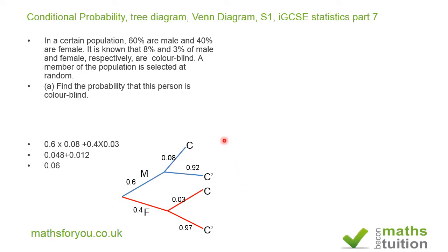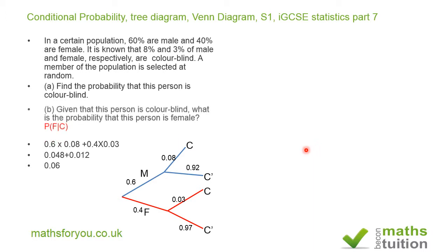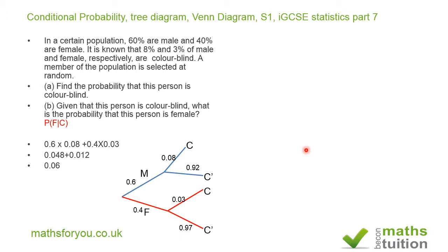Because a person cannot be colorblind and not colorblind at the same time, I'm going to draw a Venn diagram showing only the colorblind sample space. Part B says: given that this person is colorblind, what is the probability that this person is female? So we want the probability of F given C.